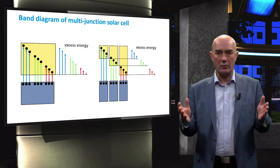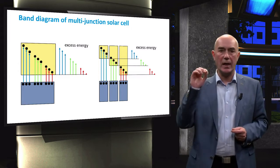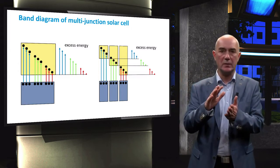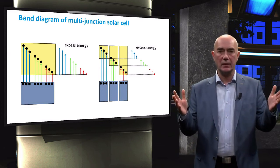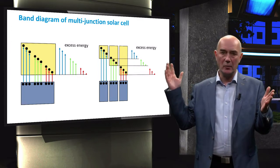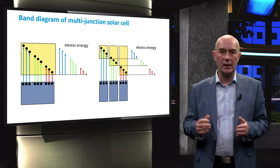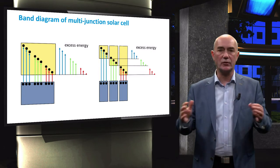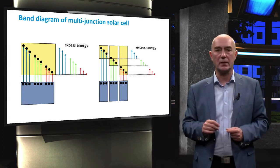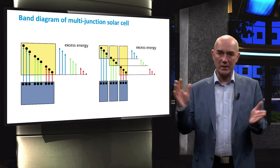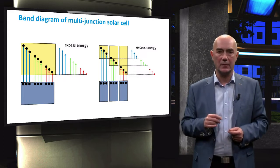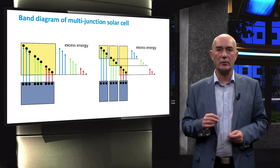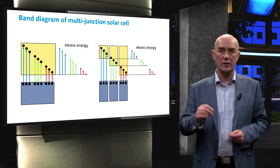The concept of multi-junction solar cells aims at reducing the thermalization loss and non-absorption loss. As you can see, when we only have a single junction solar cell, a large amount of photon energy is lost through thermalization. When we stack absorber layers with different bandgaps together, excess energy loss through thermalization is reduced.